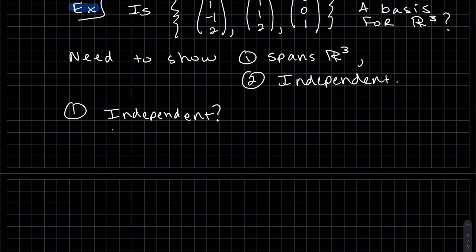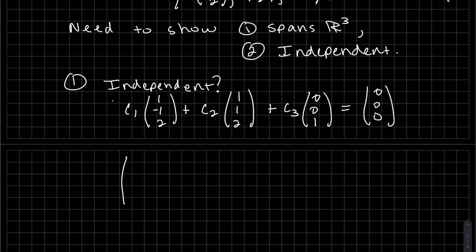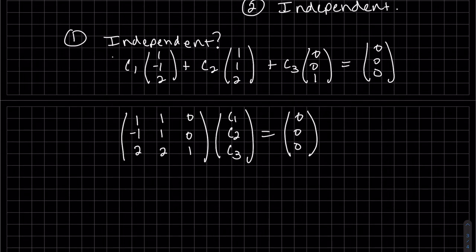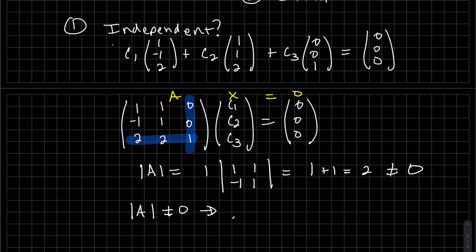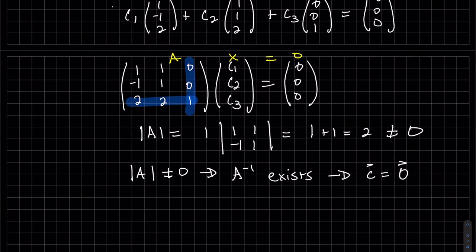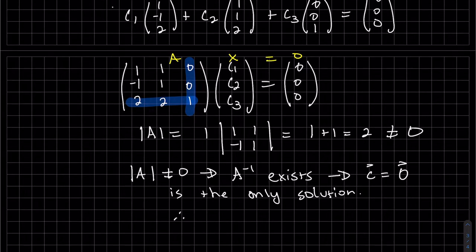So to show independence, we can show that the linear combination, that the only solution is C1 equals C2 equals C3 equals 0. So we can set up our system, and this is our unknown, so we can find the determinant of A. We can use this as our minor. Show that that determinant of A is not 0, which it's not. Since that's not 0, that implies the inverse exists, which implies my vector C is 0, is the only solution. Therefore, it is linearly independent.